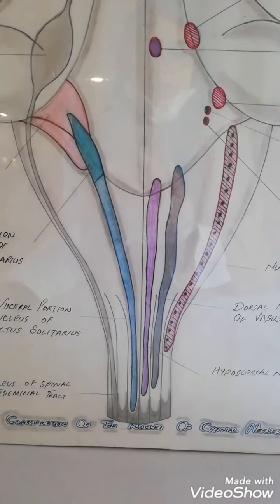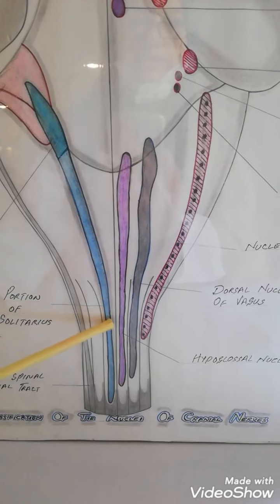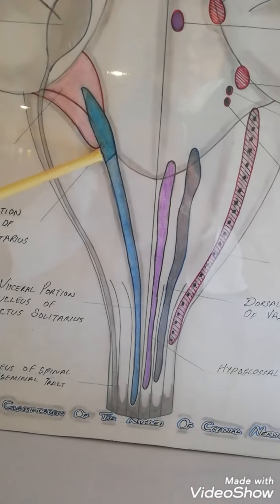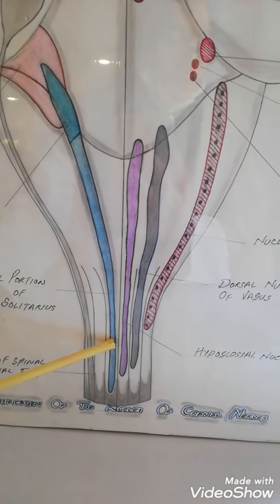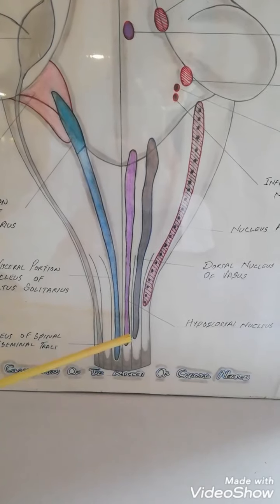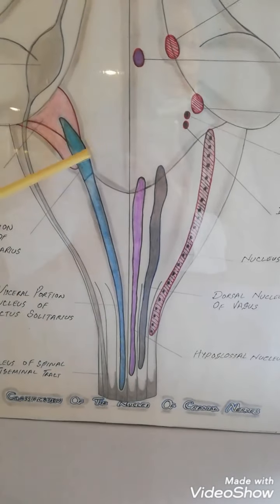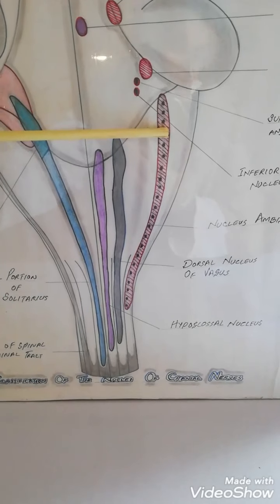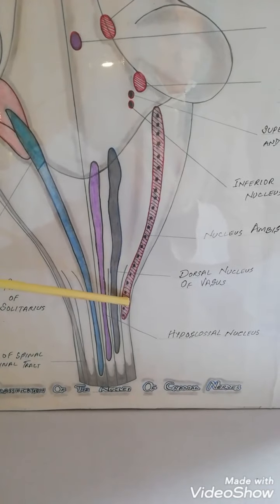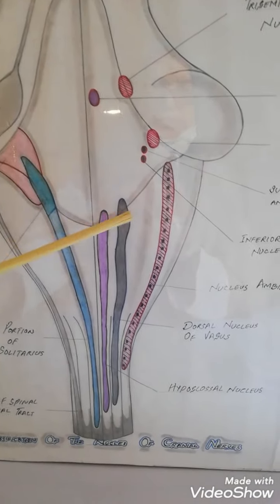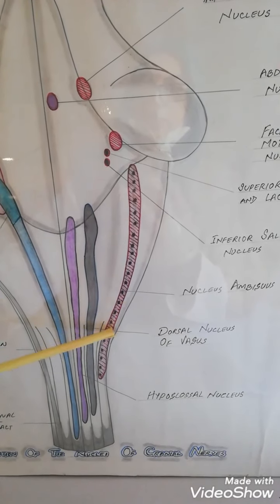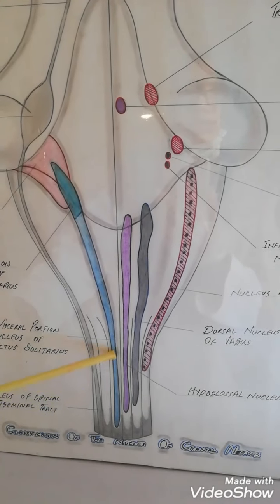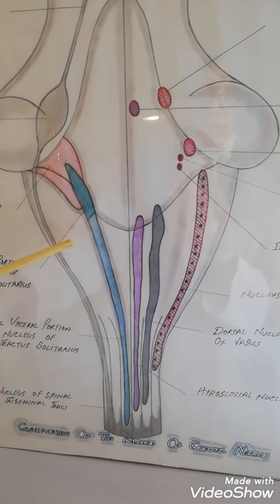To clarify: the nucleus of the tractus solitarius is the sensory collection of nuclei shared by the seventh, ninth, and tenth cranial nerves. The nucleus ambiguus comprises the nuclei of the ninth, tenth, and eleventh cranial nerves. So the nucleus ambiguus represents these three cranial nerves, and the nucleus of the tractus solitarius as a whole represents the nuclei of three cranial nerves — the seventh, ninth, and tenth.